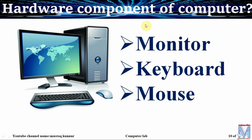Now coming to the last hardware components: monitor, keyboard, and mouse. Monitor is an output device which shows the result on the screen, whereas keyboard is an input device used to enter data or instructions to the computer. Mouse is a pointing device.